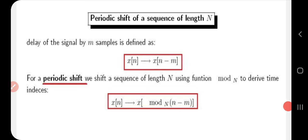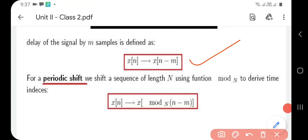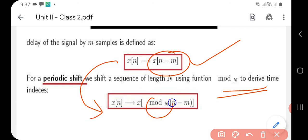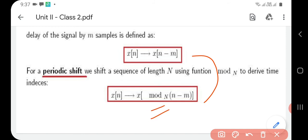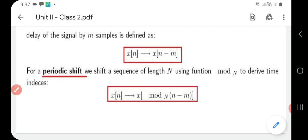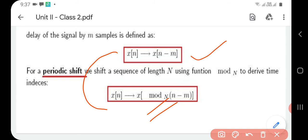Next we are going to talk about various types of shift. There are two types: periodic shift and circular shift. In a periodic shift, suppose we have a sequence of length N delayed by m number of samples, then it is represented as x(n - m). Now if that sequence is repeated an infinite number of times, we introduce the modulo function, and the equation becomes x((n - m) mod N). So if a simple sequence is delayed by m samples it is written as x(n - m), and if it repeats N times we add the modulo function.